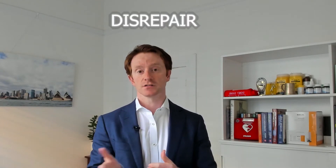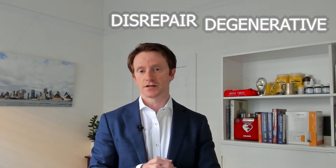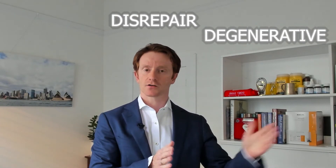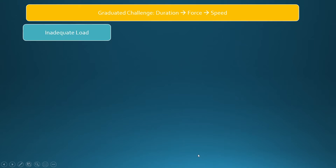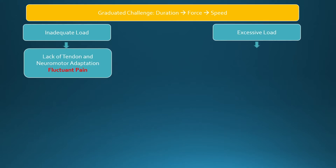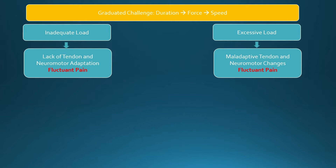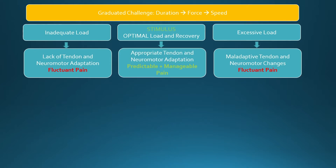Here is a summary of the latest practical application of the science on tendinopathy. In most cases by the time a patient is seeing me as a specialist they have persistent pain and tendon disrepair and degeneration — so this refers to the outer end of the continuum. We're constantly trying to provide the right stimulus for tendon capacity to increase. If we underdo it we get inadequate stimulus and fluctuating pain, and if we overdo it we get excessive stimulus and fluctuating tendon pain again. When we get the load just right, not only does the tendon adapt but the nervous system also adapts as we de-threaten it by exposure to loading.